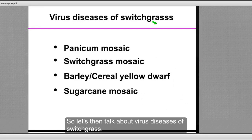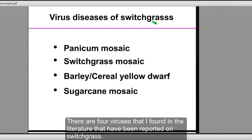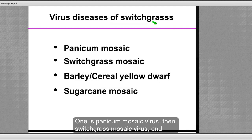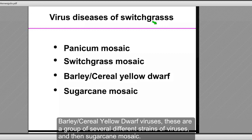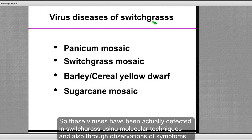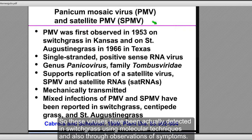Let's talk about virus diseases of switchgrass. There are four viruses that have been reported on switchgrass in the literature: panicum mosaic virus, switchgrass mosaic virus, barley or cereal yellow dwarf viruses (a group of several different strains), and sugarcane mosaic. These viruses have been detected in switchgrass using molecular techniques and also through observation of symptoms.